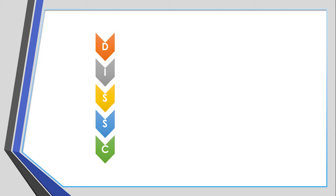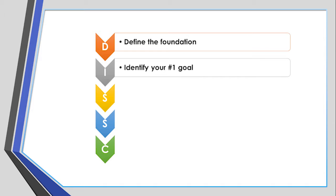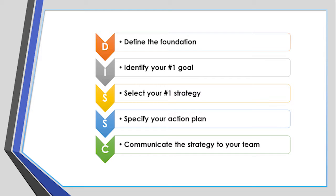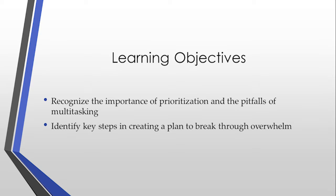DISC stands for: D — Define the foundation; I — Identify your number one goal; S — Select your number one strategy; S — Specify your action plan; C — Communicate the strategy to your team.